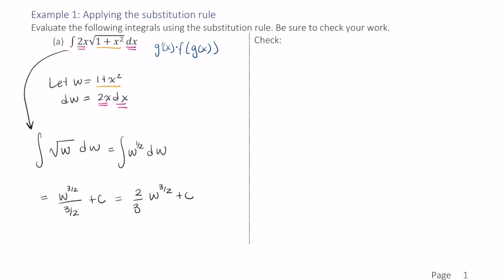Now my integral started in terms of x, and I have my solution here in terms of w. That's not a mistake. We're just not done. w needs to be back substituted here with 1 plus x squared. So that's going to go in for w. And that will give us 2 thirds times 1 plus x squared to the 3 halves power plus c.